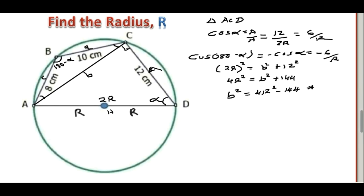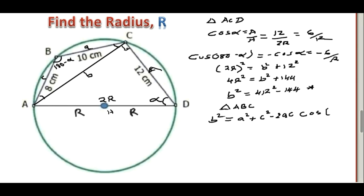Now let us go to triangle ABC. In triangle ABC we have three sides — a, b, c — and one known angle at B. So we can use the cosine rule. With angle at B, we start with b squared: the cosine rule is b² = a² + c² minus 2ac·cos B, where cos B is cos(180 minus alpha).